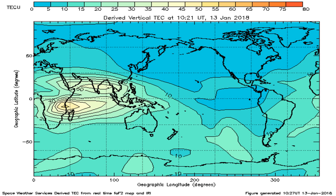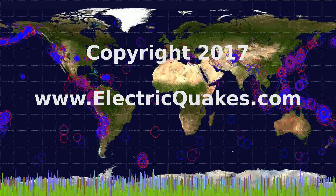Also shown are geomagnetic disturbances and another graph of total electron content across the Earth. That's the report for today. Please remember to like and subscribe and visit our Patreon at Geopilot. Thank you.